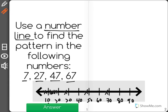Now when we go from 7 to 27, I skip 20, I move forward 20 numbers.